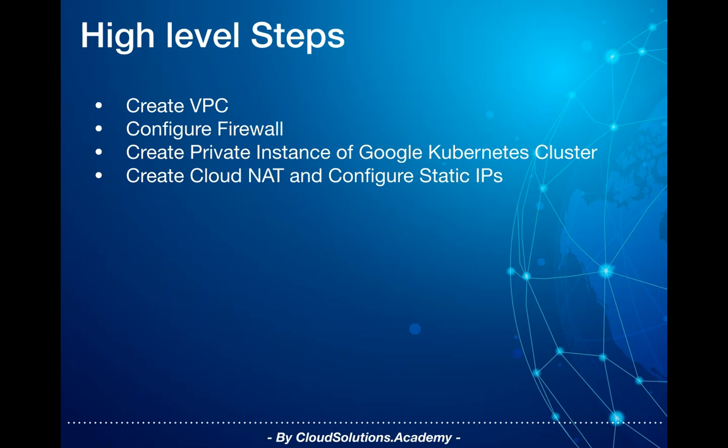Next we go about creating Cloud NAT, which basically allows instances without external IP addresses and private Google Kubernetes Engine clusters to connect to the internet. As part of that configuration we would configure a few static IPs that you can provide to external services for their IP whitelisting requirements.